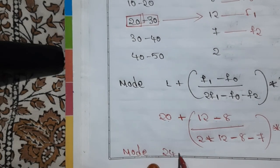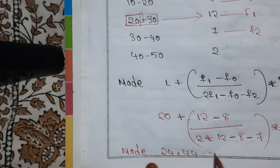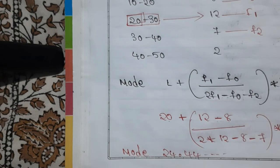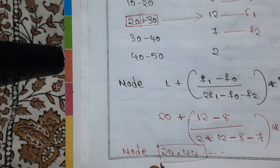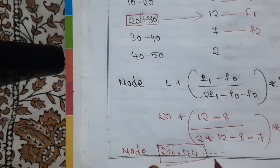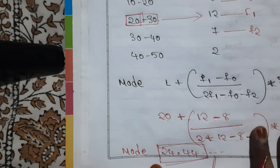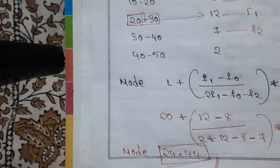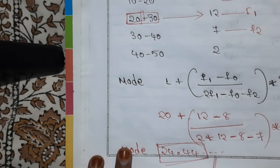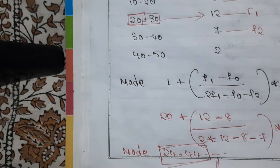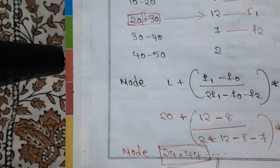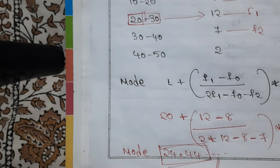Substituting into the mode formula: Mode = 20 + [(12 − 8) / (2×12 − 8 − 7)] × 10 = 20 + [4 / (24 − 15)] × 10 = 20 + [4/9] × 10 ≈ 20 + 4.44 = 24.44. So the mode is approximately 24.44. We are now done with mean, median, and mode. If you have any doubts, let me know in the comment section. See you in the next video!